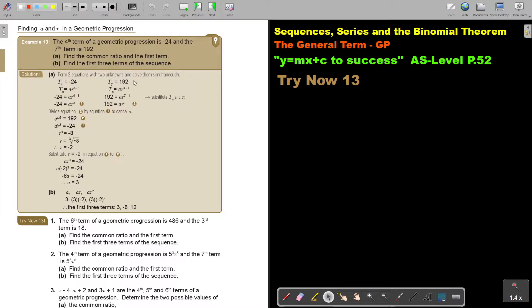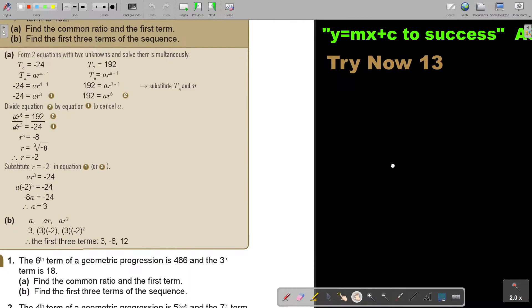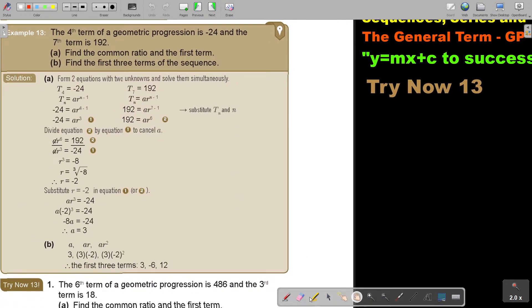Now, again, we are first forming two equations. Now, we substitute, and in the place of, this is Tn, don't forget, this is Tn, this is 4, so that's why we are going to say 4 minus 1. I am going to make it a little bit bigger. Okay. 4 minus 1, the same there, 192, 7 minus 1. So, we form two equations because there are two variables.